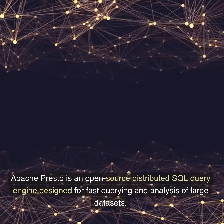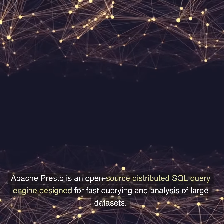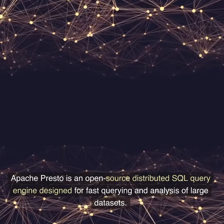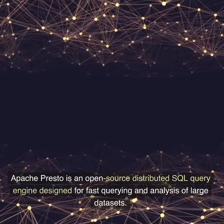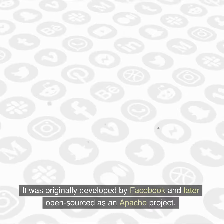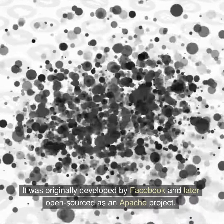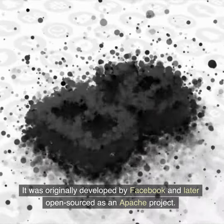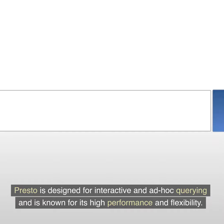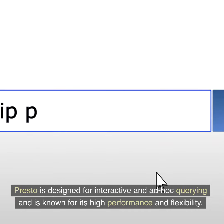Apache Presto is an open-source distributed SQL query engine designed for fast querying and analysis of large datasets. It was originally developed by Facebook and later open-sourced as an Apache project. Presto is designed for interactive and ad-hoc querying and is known for its high performance and flexibility.